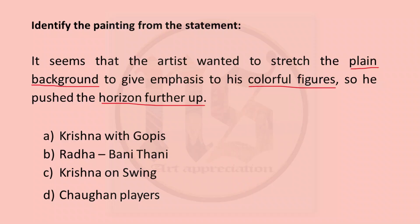Another identify-the-painting question: the artist wanted to stretch the plain background to give emphasis to his colourful figures, so he pushed the horizon further up. Radha Bani Thani is a portrait with no horizon; Krishna on Swing is on two panels with no horizon; in Chogan Players the background is plain but again no horizon. Krishna with Gopis is the correct answer — the background is plain behind the figures and the top strip has trees with the horizon pushed further up. So A, Krishna with Gopis, is the correct answer.